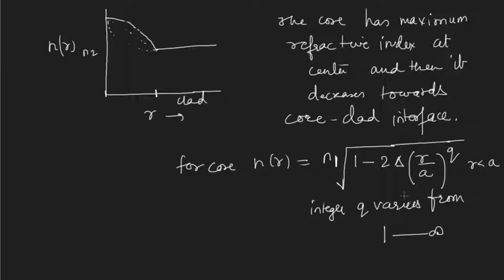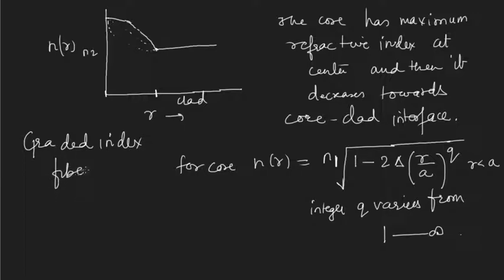So for q tending to infinity, this expression gives back the step index fiber. This type of fiber — where the refractive index of the core is graded, meaning it changes — is called a graded index fiber. 'Graded' means change in English. Graded index fibers have advantages over step index fibers, particularly related to a type of dispersion which we will explain in later lectures. We'll see other kinds of fibers in the next lectures.